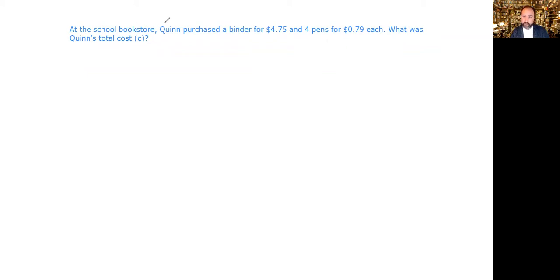The question is these are kind of multi-step problems here. At the college, at the school bookstore, Quinn purchased a binder, so we know it's one binder for $4.75. So let's say $4.75 is that first part of our equation, and that's a plus.